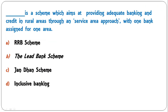Which is the scheme that aims at providing adequate banking and credit in rural areas through a service area approach, with one bank assigned for one area? Options are RRB scheme, the lead bank scheme, Jan Dhan scheme, or inclusive banking scheme. The correct answer is the lead bank scheme.